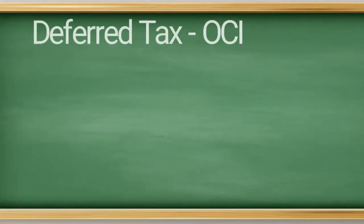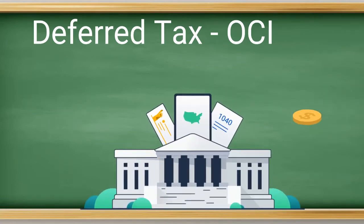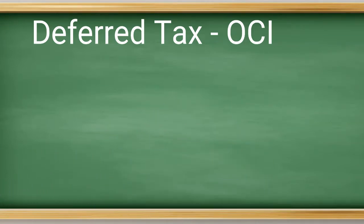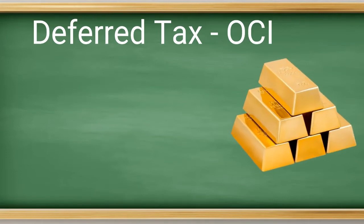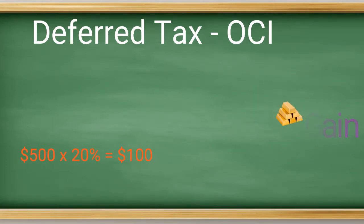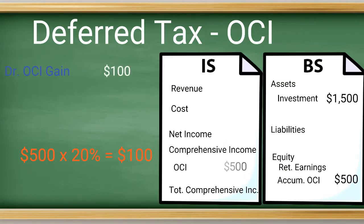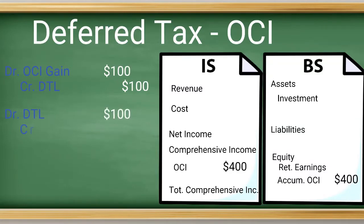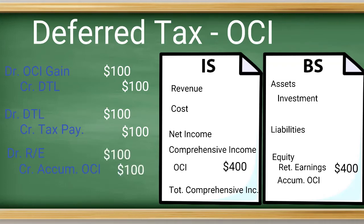Another topic we briefly want to touch on is deferred taxes in relation to OCI. If you want a refresher on deferred tax accounting, check out our video on that topic. Typically, movements in deferred taxes are charged to tax expense. However, if the movement is related to items being recognized in OCI, then the deferred amount should also be recognized in OCI. Using our previous example of an investment with a gain of $500, prior to selling the asset you would book tax entries as follows, assuming a 20% tax rate: a debit against OCI income for $100 (which is $500 times 20%) and a credit to deferred tax liability. You will have to pay this tax on the gain when it is actually realized, and therefore you have deferred this liability until that time. When you sell the asset, your tax entries would be to debit the DTL account and credit taxes payable. Your final entry upon realization is to transfer that accumulated OCI to retained earnings: a debit to retained earnings and a credit to AOCI.